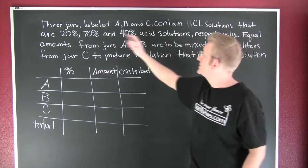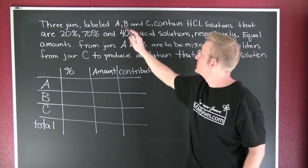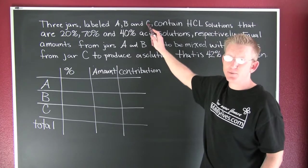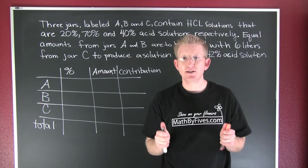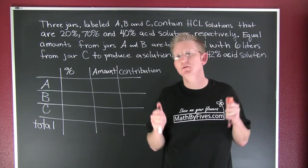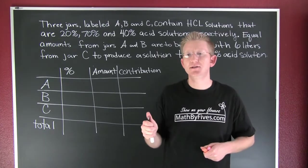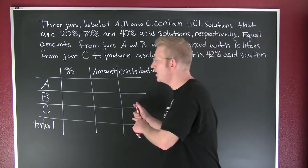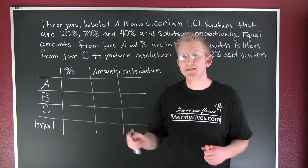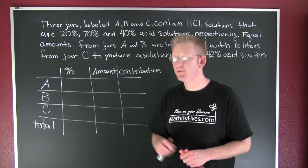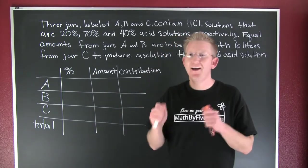What that means is that A is 20%, B is 70%, and C is 40%. When you're doing these mixture problems, it is absolutely crucial to do a table. Is a table necessary? No. Am I a fan of the table? No. Does it help you? Absolutely.